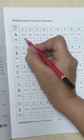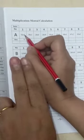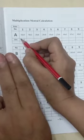6 fours are 24, 4, 2 carry forward. 5 fours are 20 plus 2, 22. 2, 2, 4 is your answer.